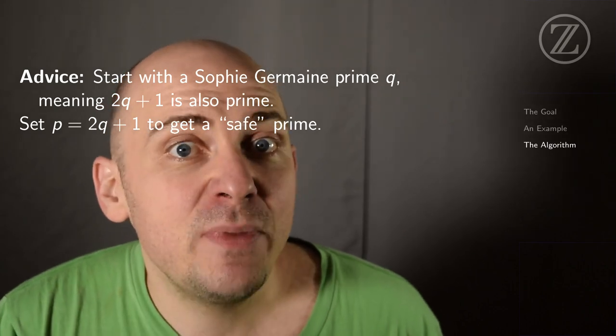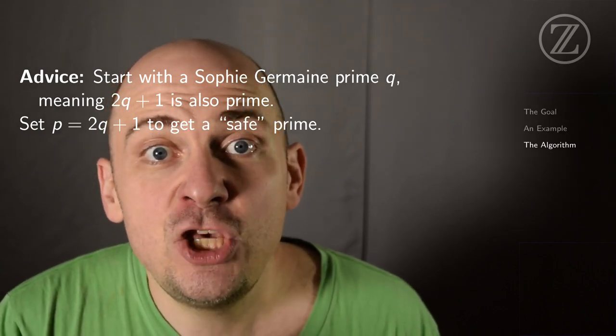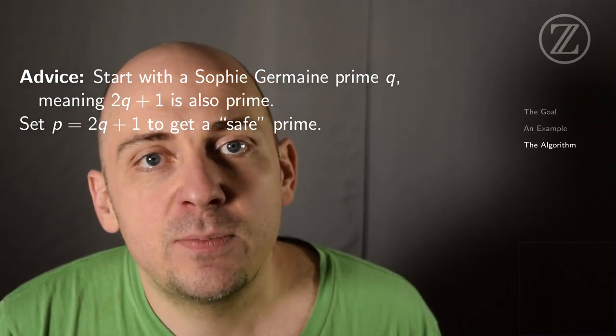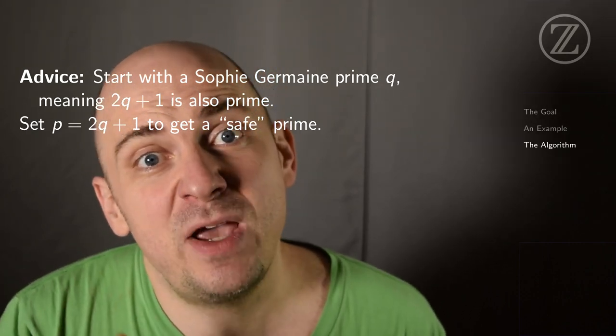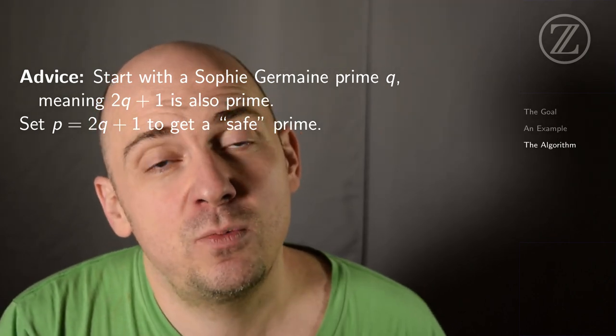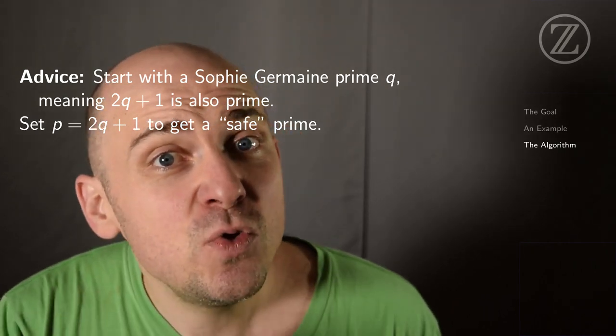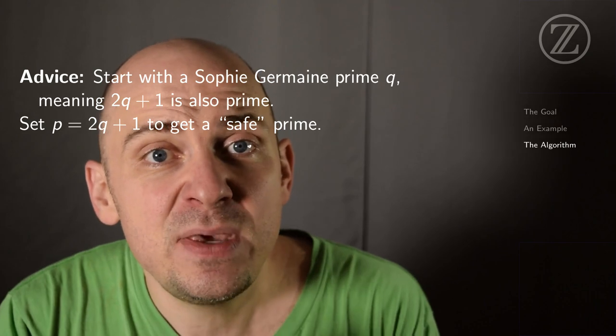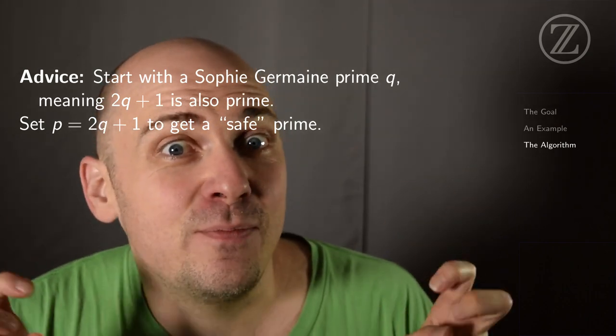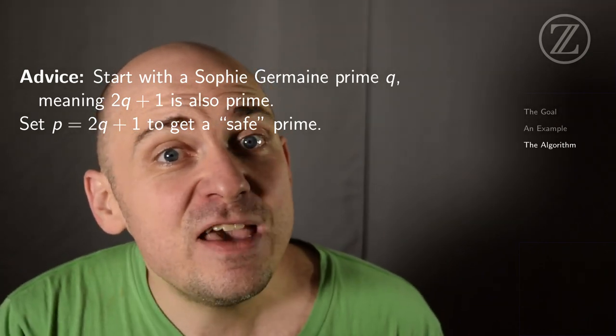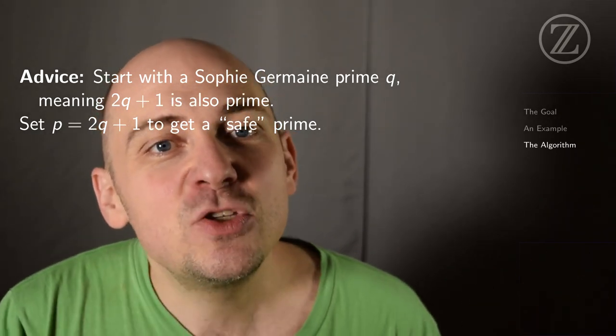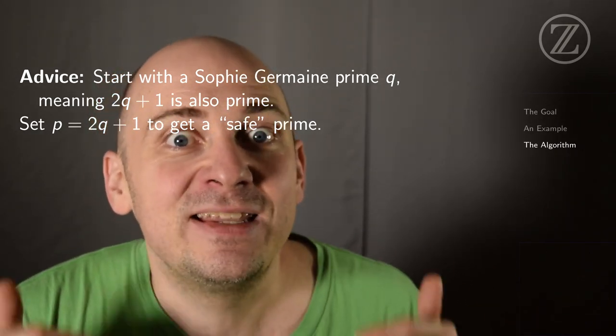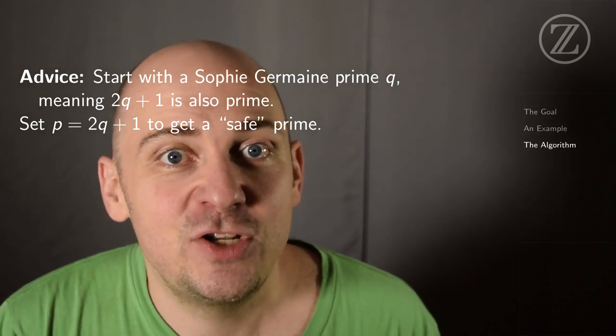So how could you do this? Well, you could start with a Sophie Germain prime. Let's call that q. And a Sophie Germain prime is a prime so that twice the prime plus one is also prime. So if q is a Sophie Germain prime, that just means that 2q plus one is also prime. So then you can use 2q plus one as your choice of p. And we'll call that a safe prime, because in that case, φ(p) is, well, it's 2q. And q is presumably enormous. So this is one way to at least avoid this kind of attack on the discrete log problem.